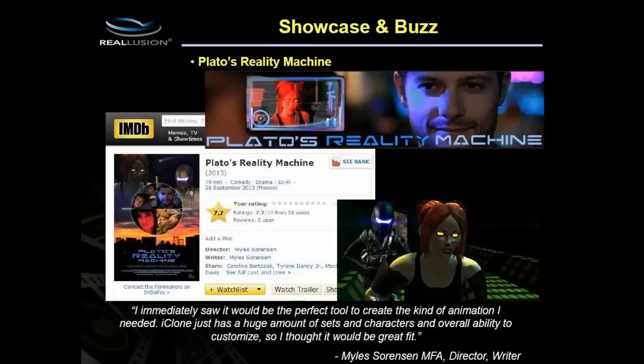Looking at the user showcase, first is Plato's Reality Machine — a film by independent director Miles Sorensen who used iClone for certain dream sequences, almost Matrix-type sequences, while the rest of the film is real life. He says iClone is the perfect tool for animation and characters, and all the CG scenes are straight out of iClone with no other software used.